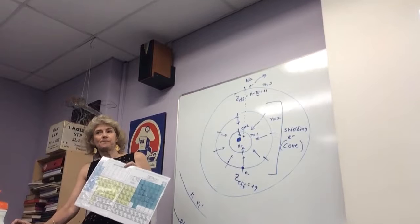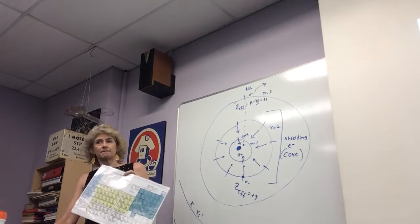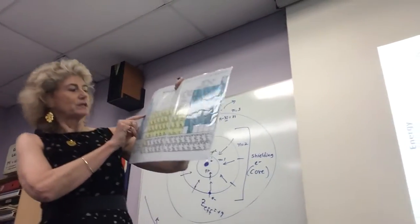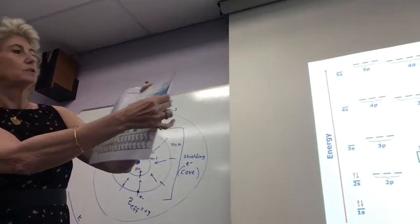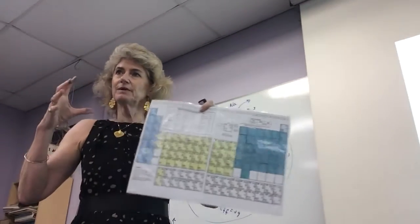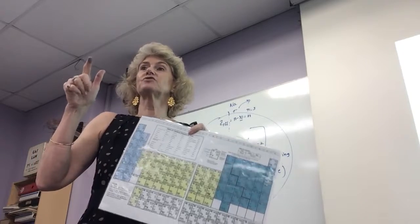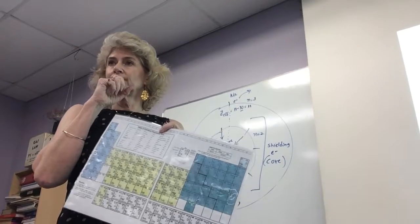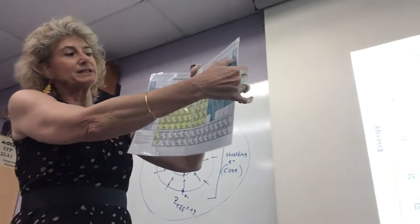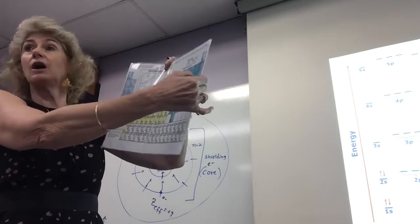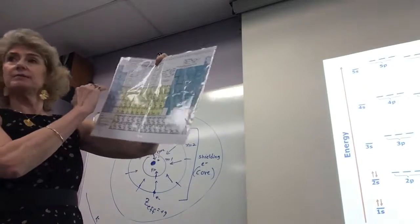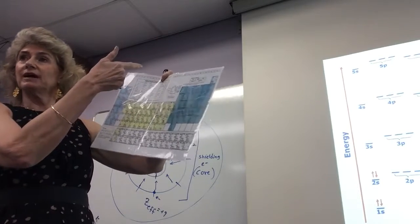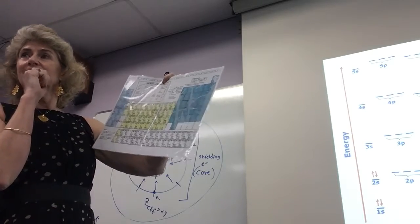From lithium to sodium — sodium will be larger because you've added a new shell. We could go from sodium to argon: the nucleus gets bigger and bigger, but Z effective gets stronger, so they all pull in. The periodic trend goes smaller across the period and bigger down the group. I have a diagram that shows that.